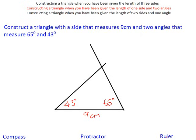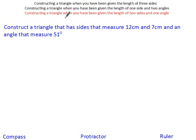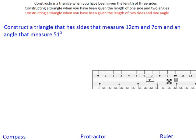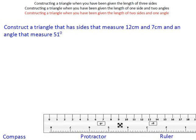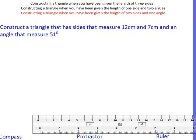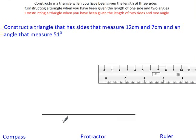Finally, constructing a triangle when you've been given the length of two sides and one angle. Again, exactly the same method. Get your ruler. Draw the longest length as your base, so that's 12 centimeters here. Nice and accurate. Make sure you label it 12 centimeters.